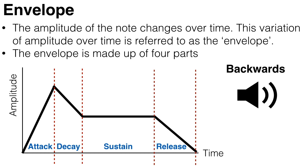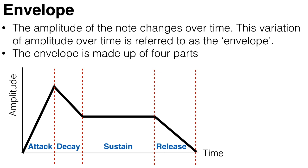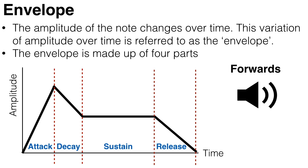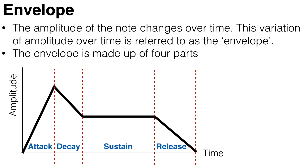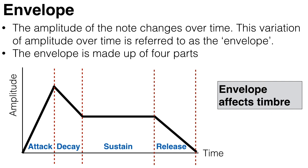For example, what instrument is this? [audio demonstration] What if I play it forwards? [audio demonstration] So forwards it obviously sounds like a piano, but backwards you're not so sure. This is because of the envelope. And every instrument has its own unique envelope.